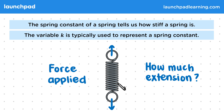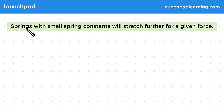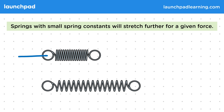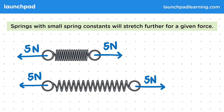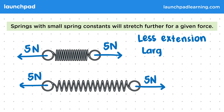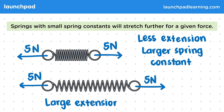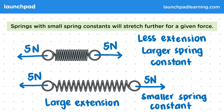Springs with small spring constants will stretch further for a given force. In this example, we're extending two different springs with the same force. The top spring doesn't extend as much, so we know that it has a larger spring constant. The bottom spring shows a larger extension, so it must have a smaller spring constant.